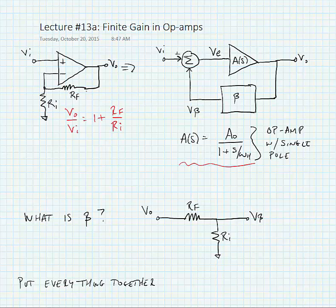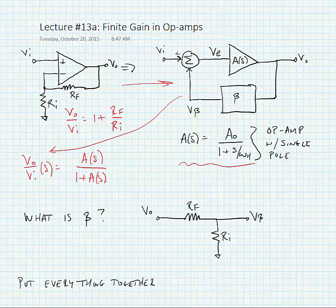We're going to model the op amp circuit with a feedback system where we have forward gain of A(s) and a reverse gain of beta. If we were to solve this feedback loop, we would find that Vout over VI with respect to frequency is equal to A(s) divided by 1 plus A(s) times beta.